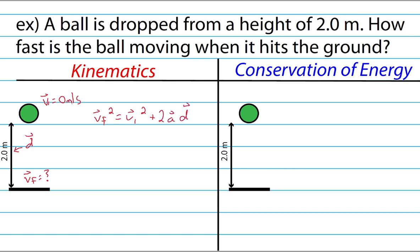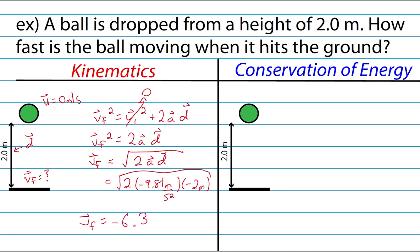Now since my initial velocity is zero, that formula would simplify down to vf squared equals 2ad. And if you wanted to rearrange it, vf equals the square root of 2ad. So I could substitute in, and I would get 2 times negative 9.81 meters per second squared, times negative 2 meters. And I'd have to make that a negative 2 meters because the ball was falling downwards. And I would square root it to get my final velocity. It would be negative 6.3 meters per second.